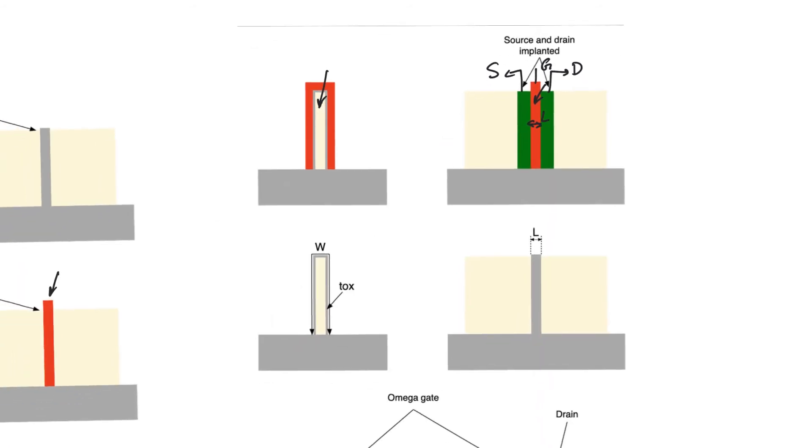The width of the channel on the other hand will be the perimeter of the whole fin because this is where the channel will be formed. The channel will be formed around the whole thing because the gate surrounds the whole thing. So what's the advantage of this? The advantage of this is that the gate now surrounds the channel on three sides and so it has control over the channel from three sides. So if the drain wants to couple to the channel the only way it can couple to the channel is through the bottom which is an insulator, a very thick insulator, and so it's going to have a very small CD.